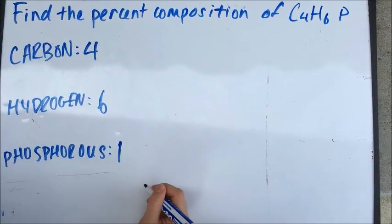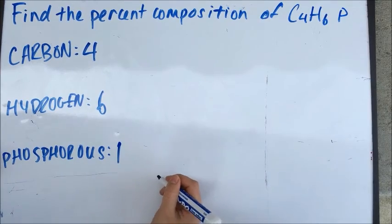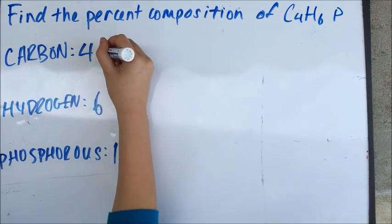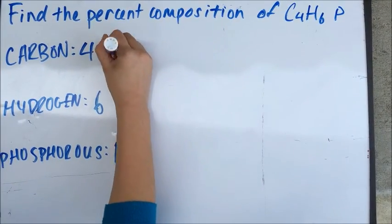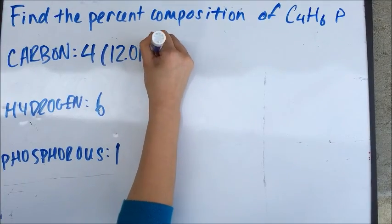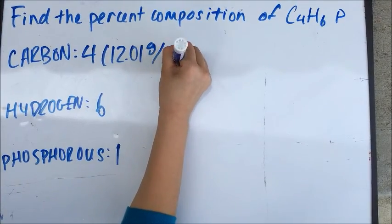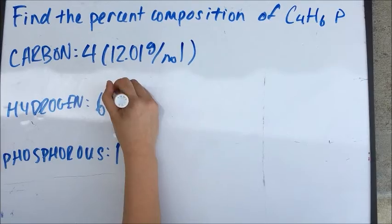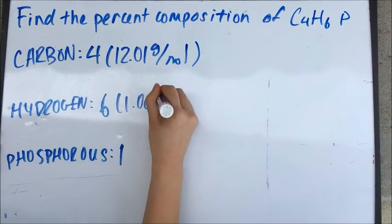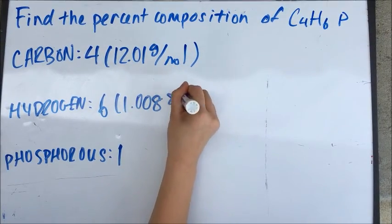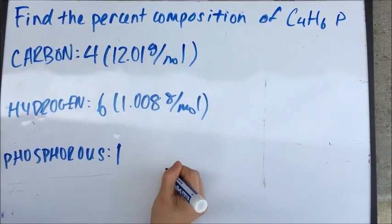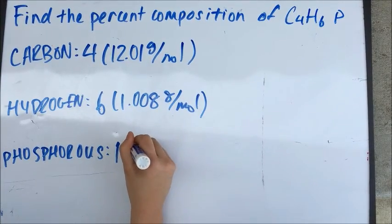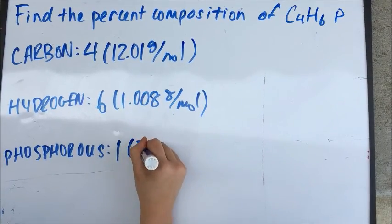Then multiply by the molar atomic mass of each element. Carbon is 12.01 grams per mole, hydrogen is 1.008 grams per mole, and phosphorus is 30.97 grams per mole.